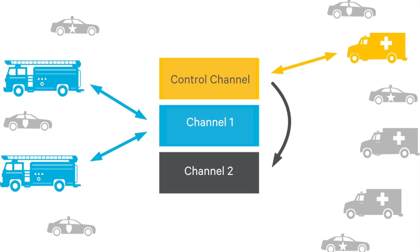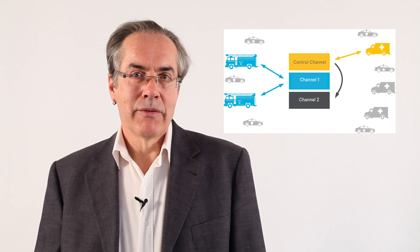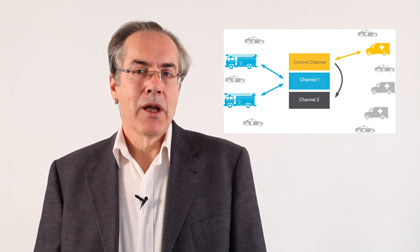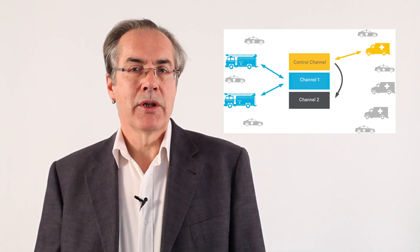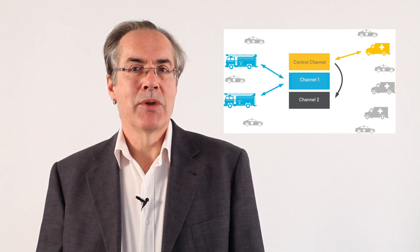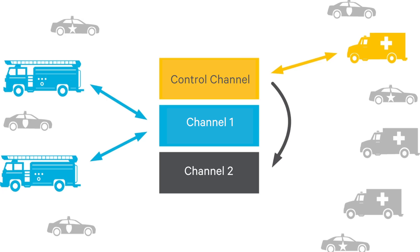Trunked radio might be better called computer-controlled or computer-aided radio. A trunked user identifies another user or group of users they wish to communicate with, and a computer automatically assigns them the first free available channel from a pool of channels to make each call. The underlying principle of trunking is that not all users or groups will want to communicate at the same time, so there can be many more users or groups than there are repeaters in the system.